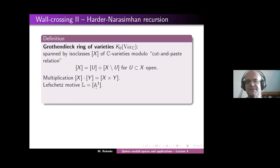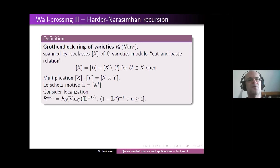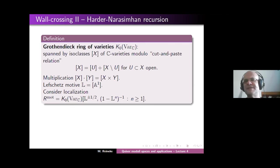This Grothendieck ring of varieties will be the coefficient ring for all the computations which we will do. We need some more flexibility though, so we consider the following localization, which I will call R_mot — the ring of localized motives. We consider this Grothendieck ring of varieties and adjoin some additional elements: a formal square root of L (the affine line), we want the affine line to be invertible, and we want to invert expressions (1 − L^N) for all N.